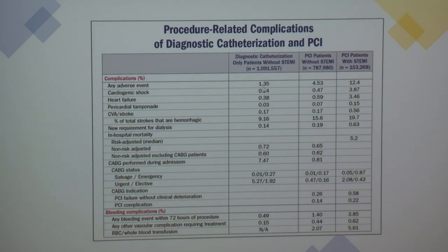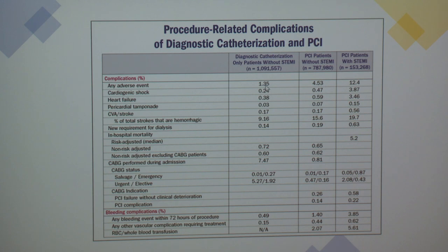To compare complication percentages: diagnostic catheterization versus PCI in a stable setting versus PCI in the setting of an MI — obviously when they come in sick, the chance of complications is higher. Risk of any adverse events increases from about 1.3% for diagnostic cath to 4.5% for stable PCI, and if they come in with a STEMI and we're intervening, the risk of complications reaches 12%. So the risk increases significantly depending on the clinical scenario.